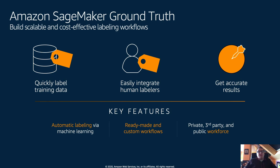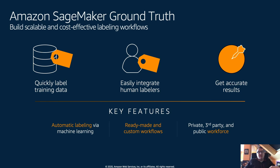Ground Truth isn't just about human labeling. You can use Active Learning, where in parallel to human labelers, a machine learning model is automatically trained on annotated data. When the accuracy of that model exceeds human labelers, the model starts labeling at scale. So if you have one million images, maybe human labelers only need to do 10–20% of them, and the rest will be automatically labeled by the model — a great way to speed up annotation and save money.